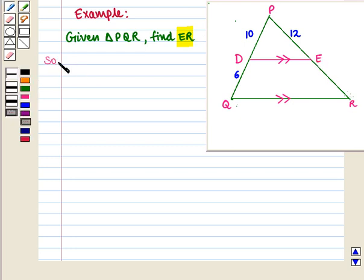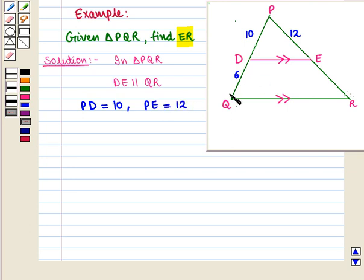Let us start with the solution of this example. Here we are given triangle PQR, where DE is parallel to QR. Also, PD is equal to 10, PE is given as 12, and DQ is given as 6, and we have to find ER.